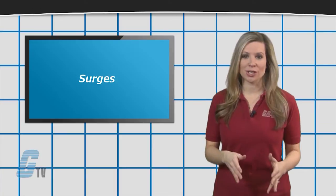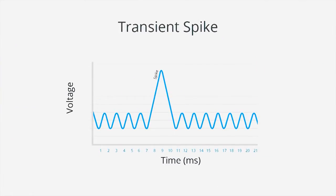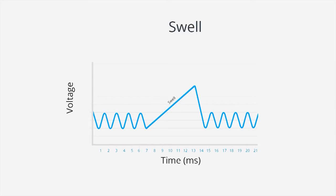Some have used the term surge to describe a transient voltage or current lasting from microseconds to a few milliseconds that involves much higher voltages than normal. Others have used the term to describe a momentary overvoltage lasting a few cycles with voltage 5 to 10 percent above normal.